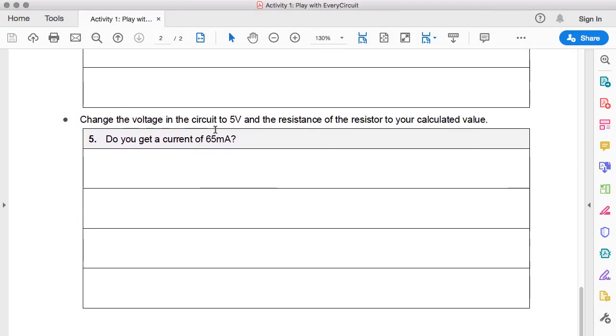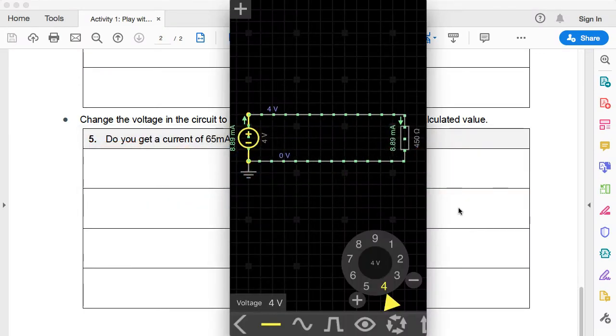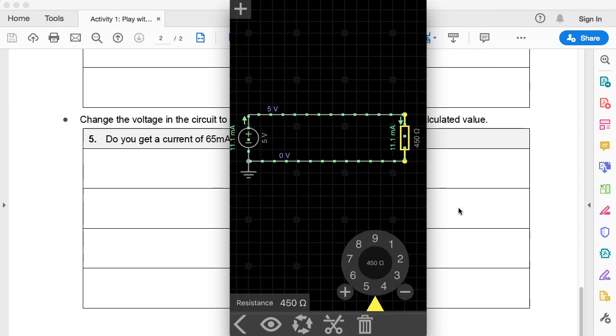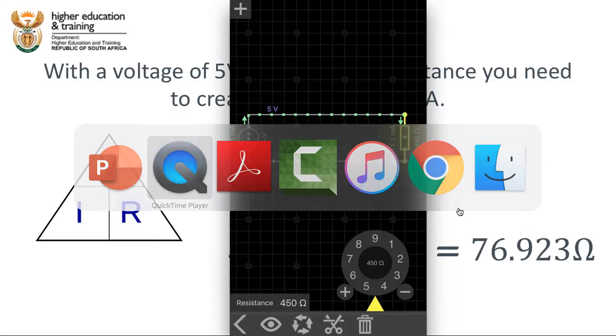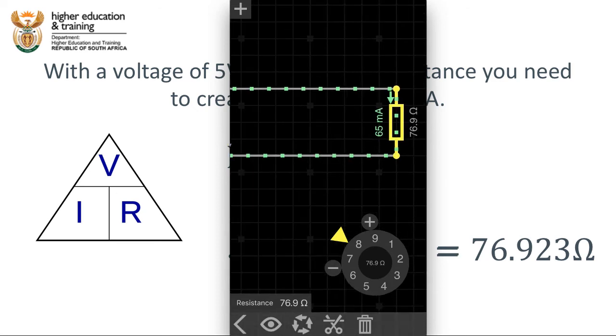Now it asks us to change the voltage in the circuit to 5 volts, and the resistance of the resistor to our calculated value, 76.923 ohms. We've already got the battery selected, so now we can simply change that voltage up to 5 volts. Now we're going to touch on the resistor, and we can change the resistance. We can drag this around the circle until we get to about 76.9. I'm just going to touch on the minus sign, which is going to decrement it down by 0.1 of an ohm. We can see that the amperage now, the current flowing through the circuit is 65 milliamps, exactly as we calculated.